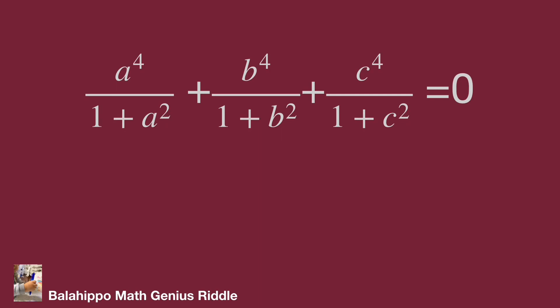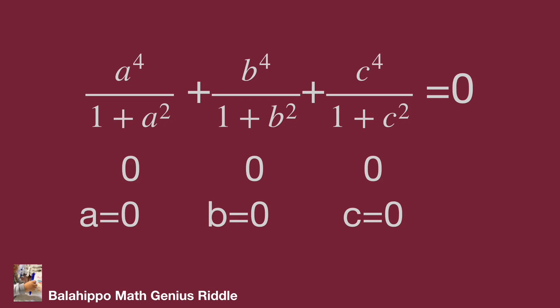Since a² ≥ 0, we have a⁴ ≥ 0, so each item a⁴ over (1 + a²) is greater than or equal to 0. Because the sum of these non-negative terms equals 0, each individual term must equal 0. So a⁴ over (1 + a²) = 0, b⁴ over (1 + b²) = 0, and c⁴ over (1 + c²) = 0. Therefore a = 0, b = 0, and c = 0. That is the answer.